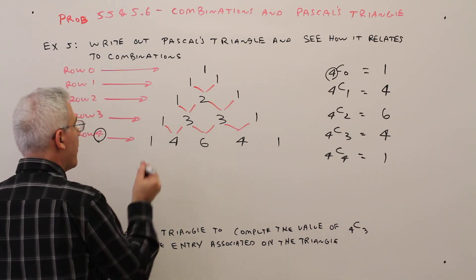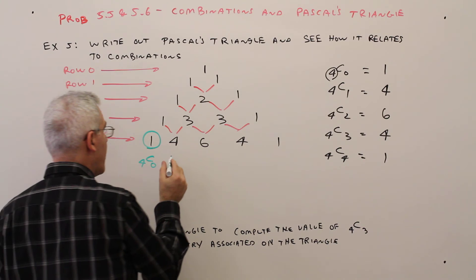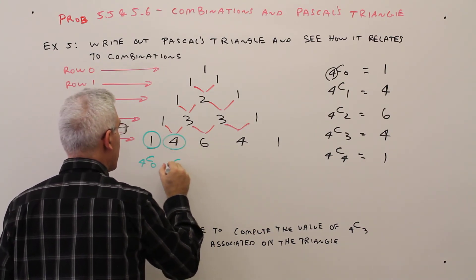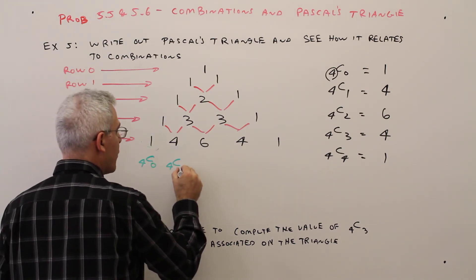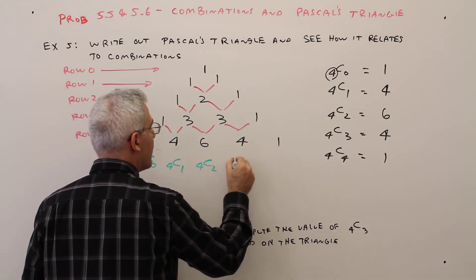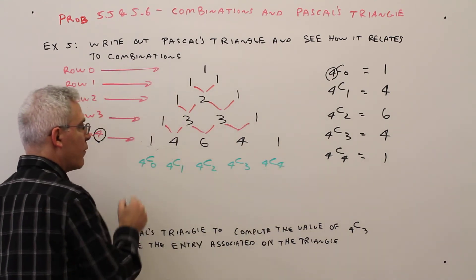So this one right here is 4 choose 0. I don't want to circle these because it's probably something I've got to do over here. 4 choose 1, 4 choose 2, 4 choose 3, and 4 choose 4.